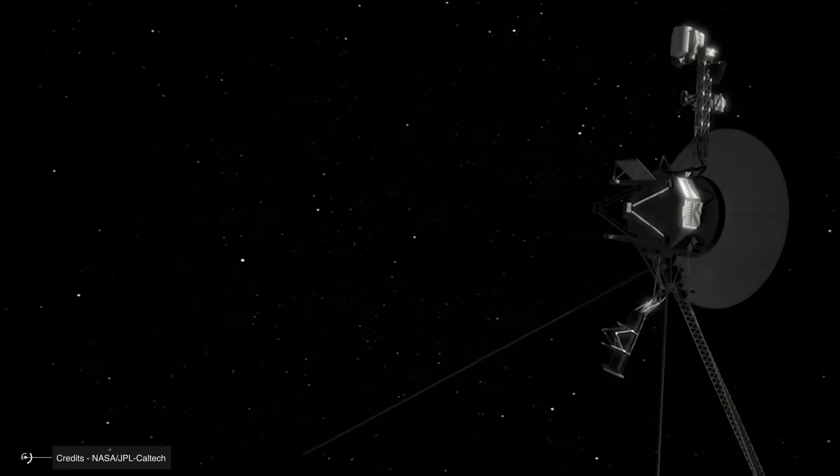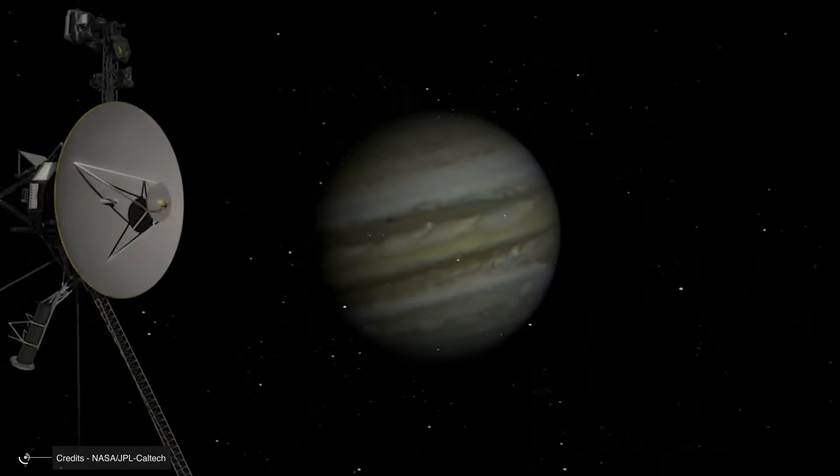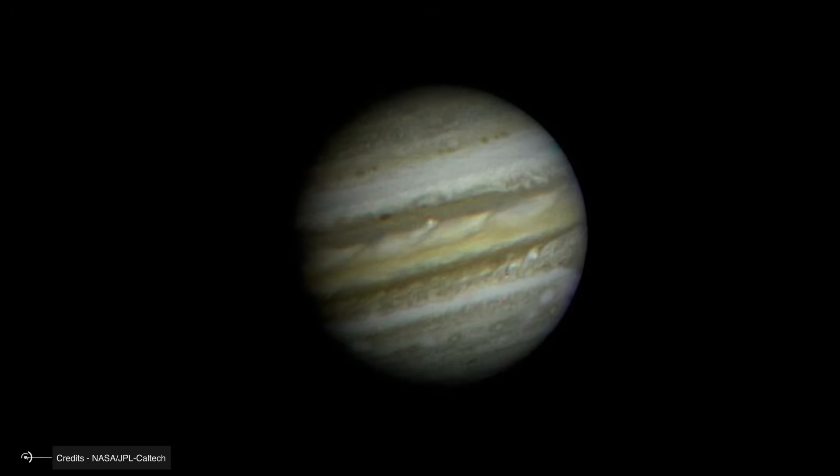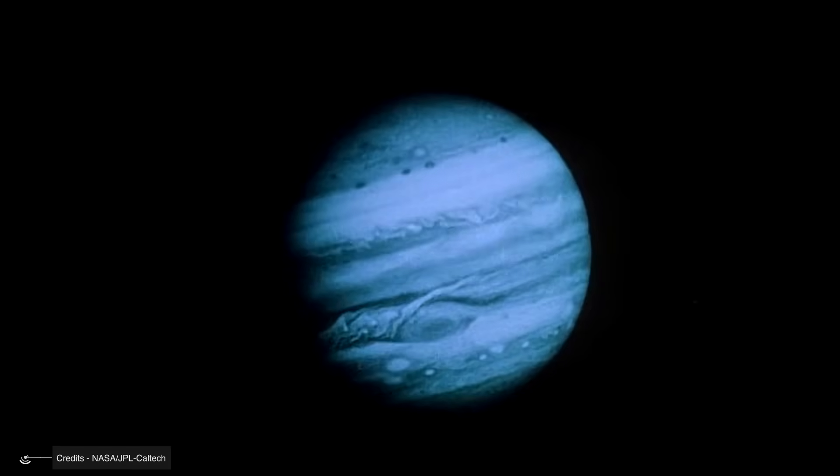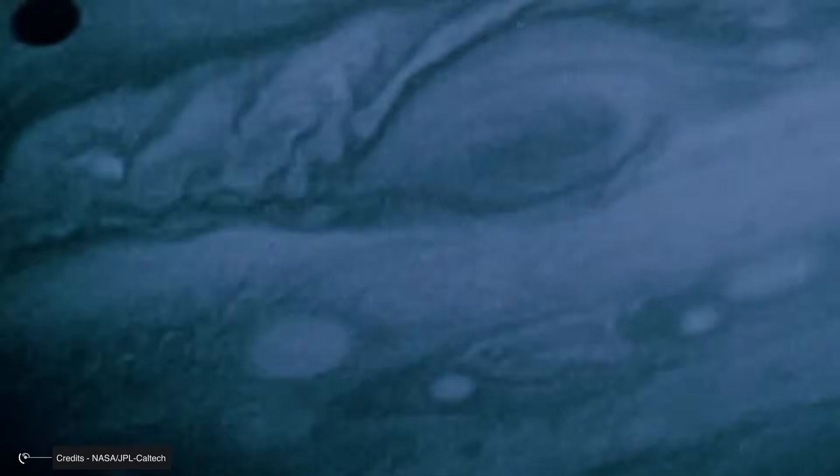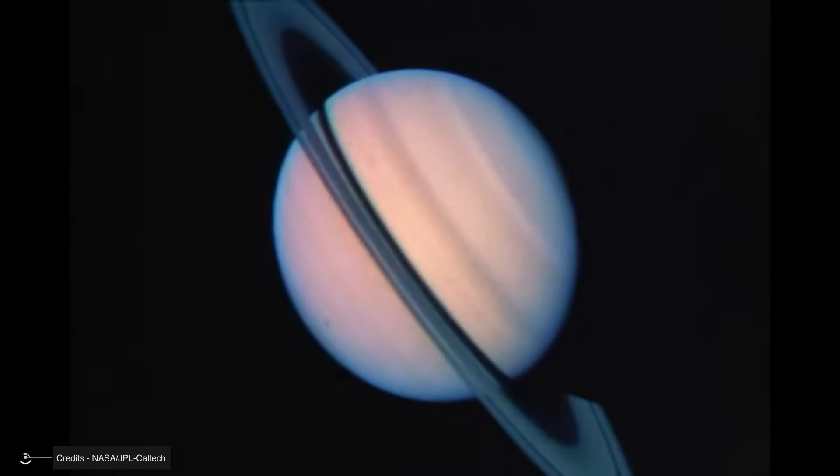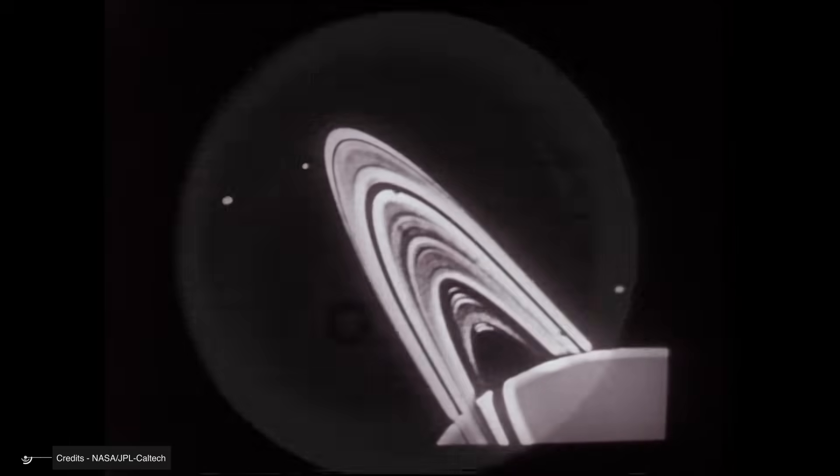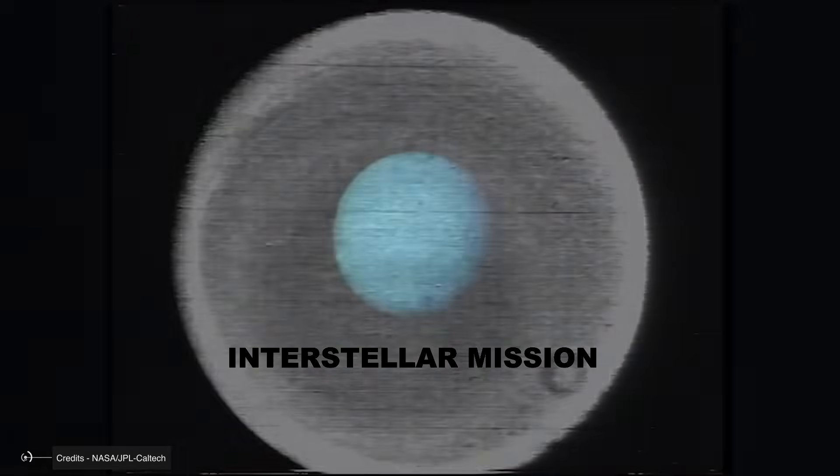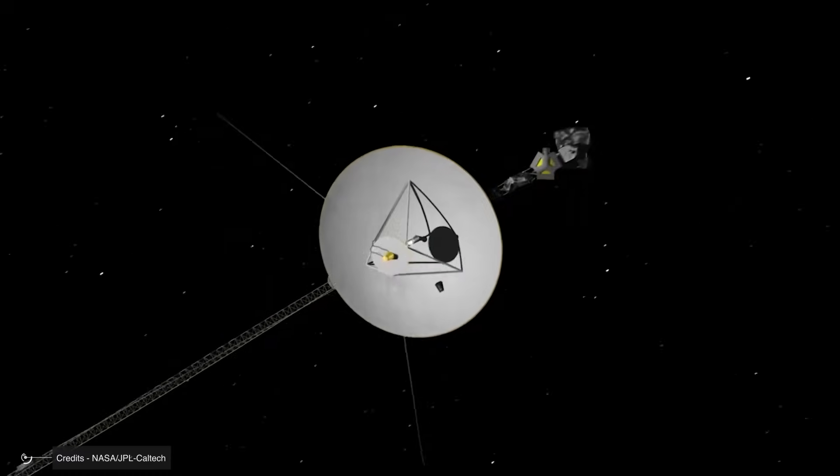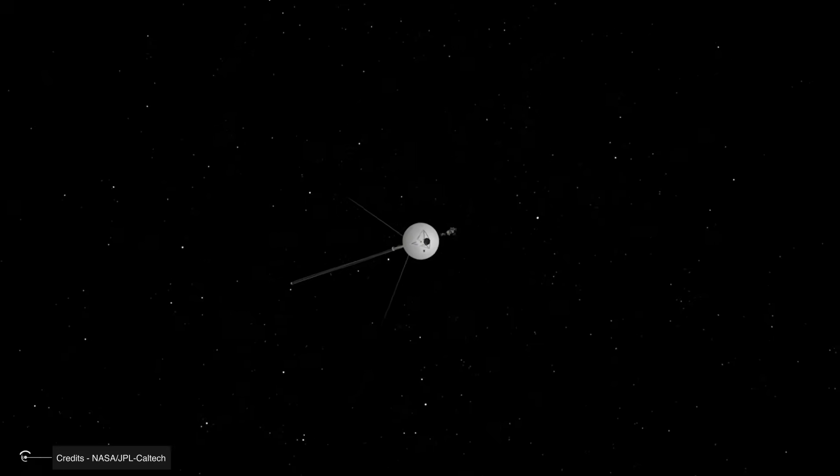Voyager 1's primary objective was to study Jupiter and Saturn. Voyager 2, on the other hand, was programmed for a longer journey, visiting not only Jupiter and Saturn, but also Uranus and Neptune. Neither of them had leaving the solar system as their original primary mission. Furthermore, the term interstellar mission wasn't part of NASA's official vocabulary until years later.